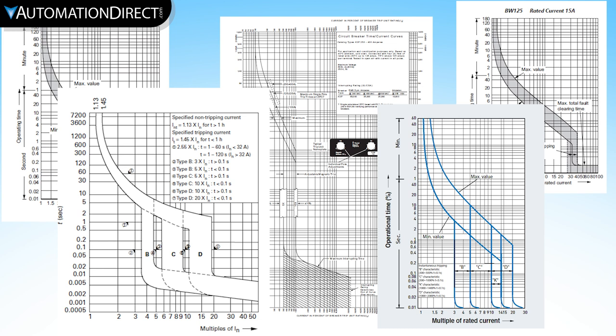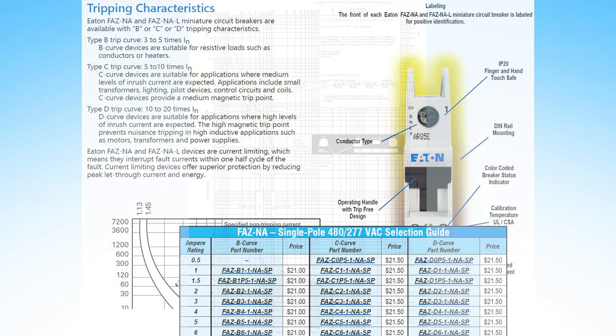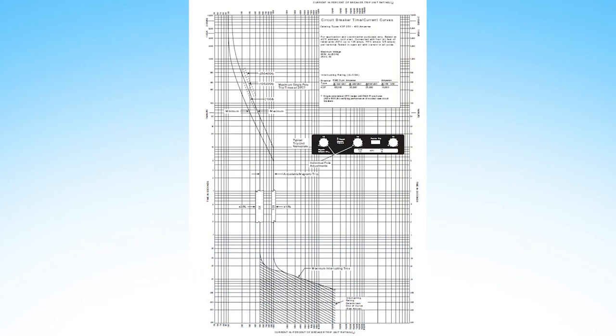For this video we'll focus on breakers but the same applies to fuses. You may see breakers sold based on trip curve. Looking at the curve chart, this axis is time and this one is amperage as a multiple of rated current.